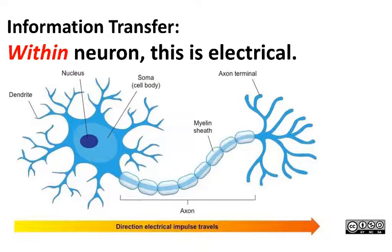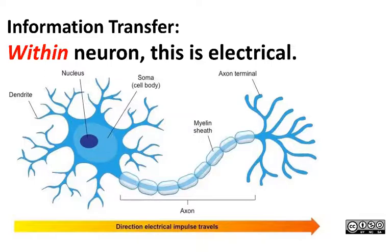Information transfer inside a nerve cell is electrical. Electricity is the movement of charged particles — positively charged ions like calcium, sodium, or potassium, or negatively charged ions like chlorine. Each of those is going to have a different effect. The electrical charge, this wave of electrical charge, follows from the dendrites to the soma to the axon hillock, which is the decision point about whether or not the signal is going to be passed on to another cell.